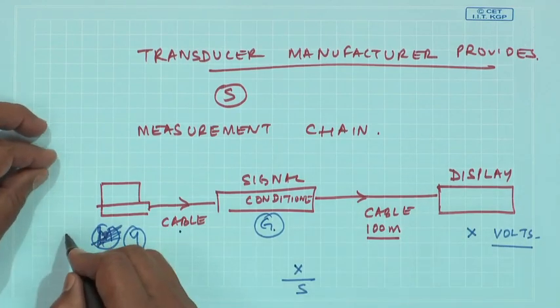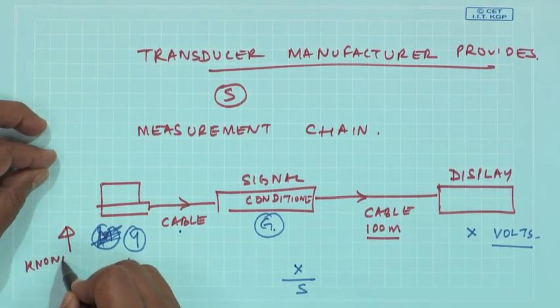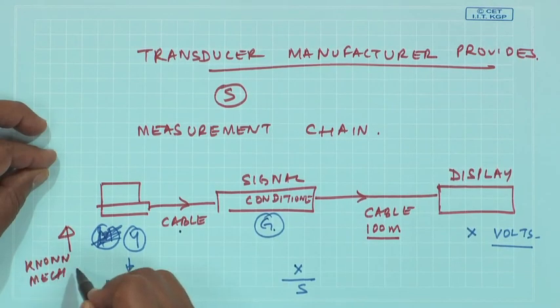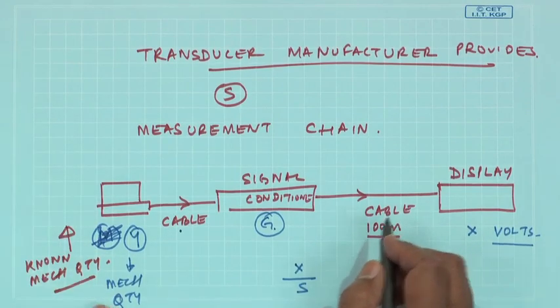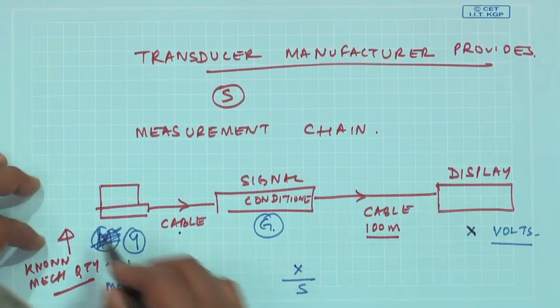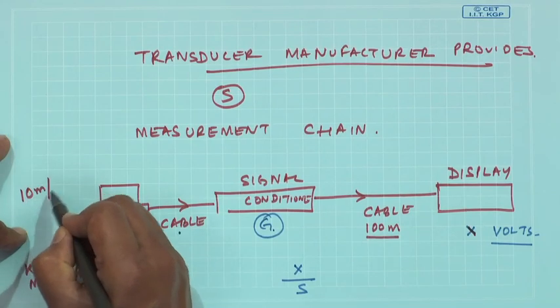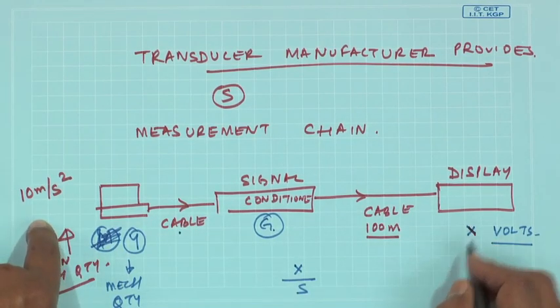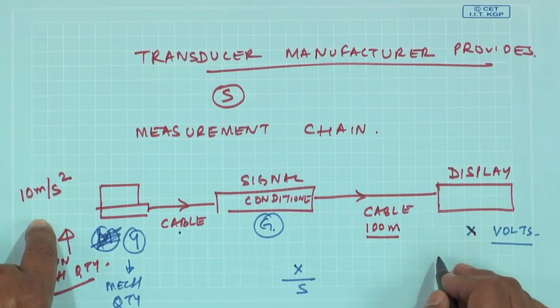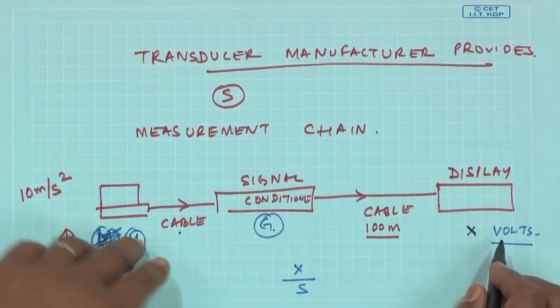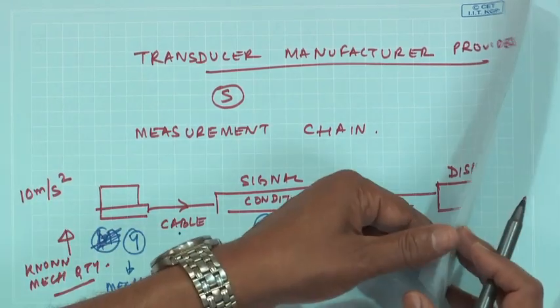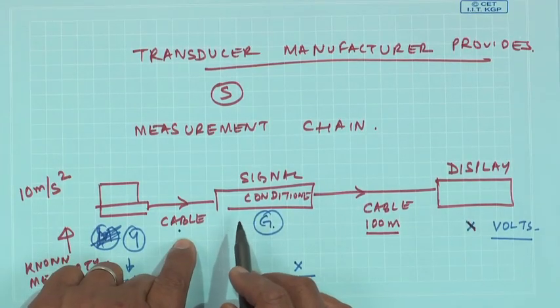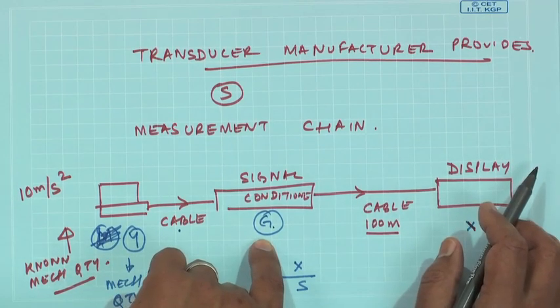Usually in such a scenario, we always give a known mechanical quantity in the field, particularly while you are measuring vibrations. There are calibrators which will give you a known mechanical quantity. If I know I am giving an actual input of 10 meters per second square and I am getting x volts, I know whenever I get y volts it will corresponds to 10 by x times y. This field calibration of transducers is important, because in such a scenario I need not worry about what is the voltage drop in the cable, what is the gain set in the amplifier and so on.